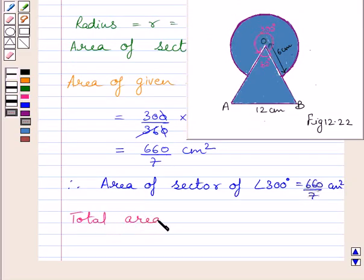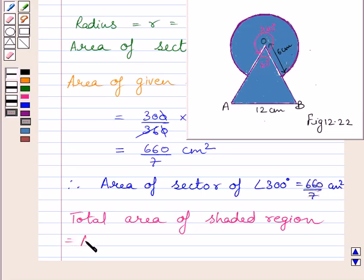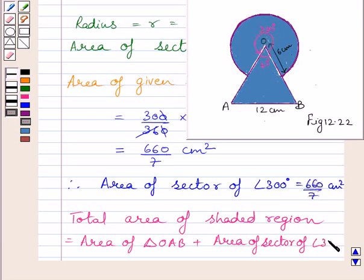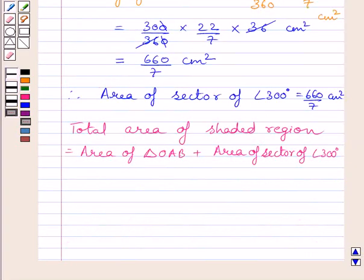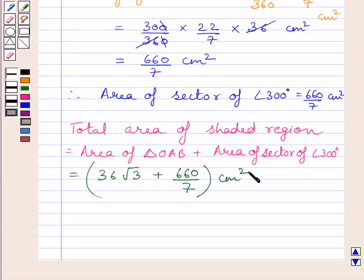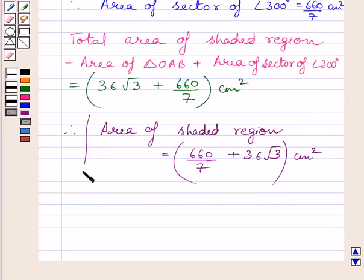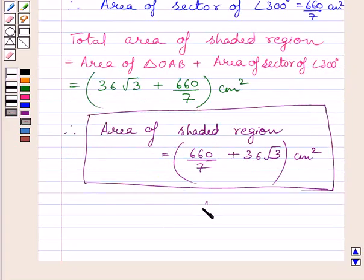Now we know the total area of the shaded region is equal to area of triangle OAB plus area of sector of angle 300 degrees. Substituting the corresponding values, we get 36 root 3 plus 660 upon 7 cm² as the area of the shaded region. This is our required answer. This completes the session — hope you understood the solution. Take care and keep smiling.